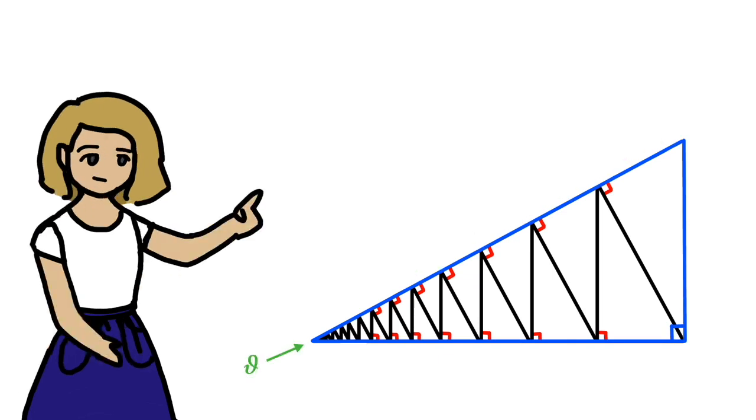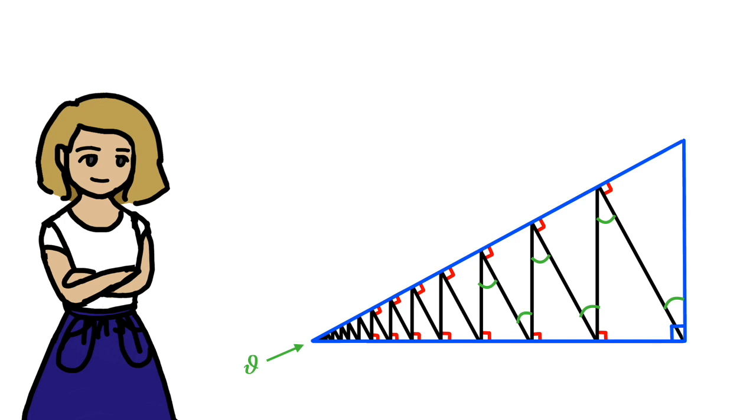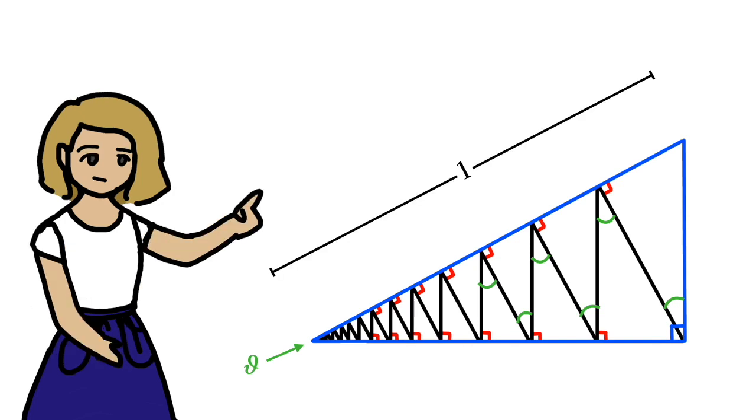So I let this angle be theta, meaning all these angles are also theta. Then I set the hypotenuse to be 1, so that the opposite side is equal to sine of theta, which I am sacrilegiously going to denote as s. Similarly, the adjacent side is cos theta, denoted by c.